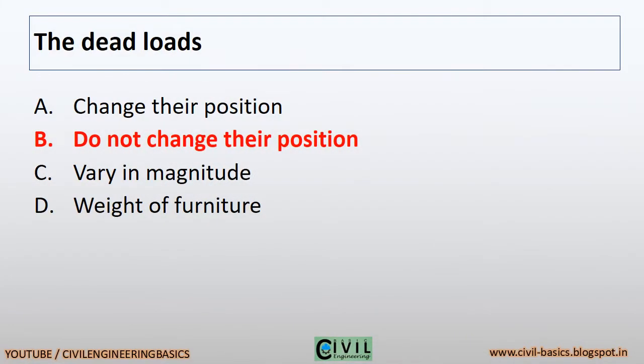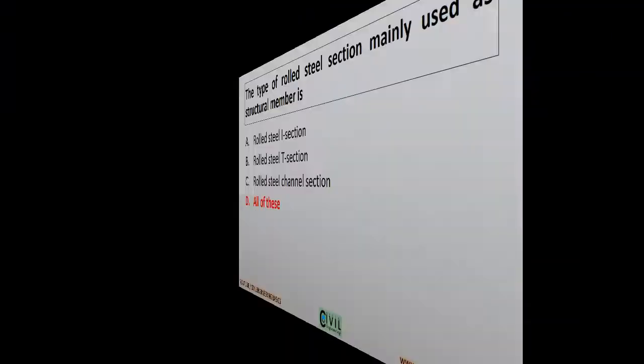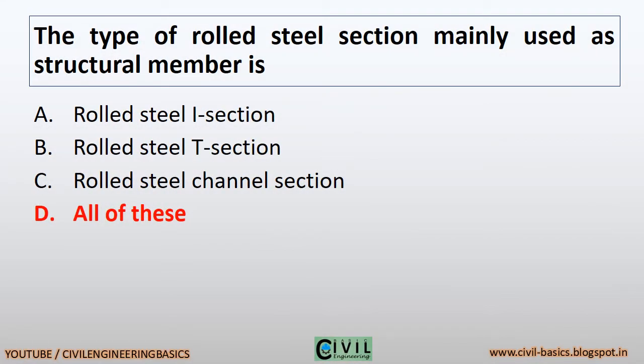The dead loads do not change their position. The type of rolled steel section mainly used as a structural member is: rolled steel I section, rolled steel T section, rolled steel channel section — all of these.